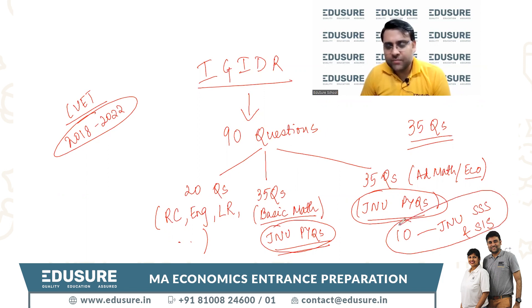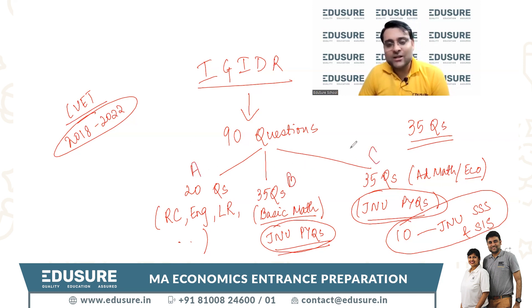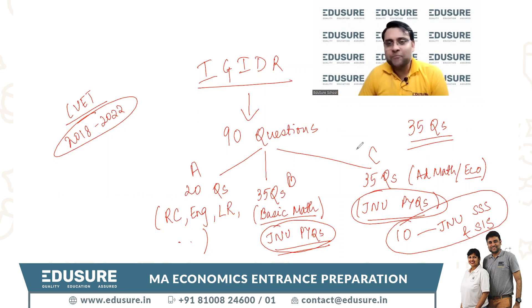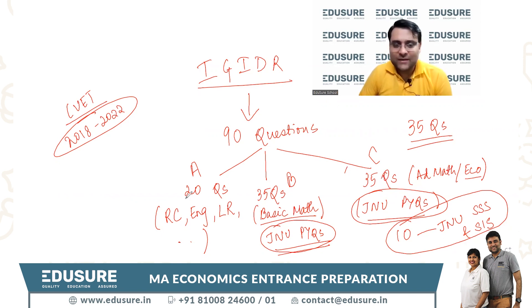This is the question pattern: Section A, Section B, and Section C. Another question we are getting is whether there is a specific sectional cutoff — yes, there is. Normally they keep a cutoff for each of the three sections, so you need to perform in all of them. It's not possible to do only the basic math and eco part and get through. If you don't attempt Section A, you will not get an interview call.